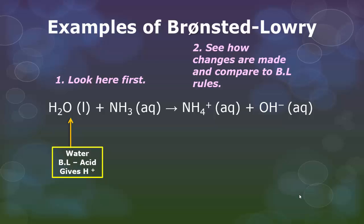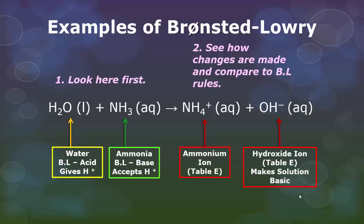When we look, our water is going to be called the Bronsted-Lowry acid. Why? Because it gives up its hydrogen ion. The ammonia is a Bronsted-Lowry base because you'll notice it accepted another hydrogen. Here's your ammonium ion. You'll notice it accepted that hydrogen ion to make NH4 and we notice our H2O broke down and made OH- which is a hydroxide ion. Also both these are found in table E and your hydroxide ion is the reason why the solution is basic.